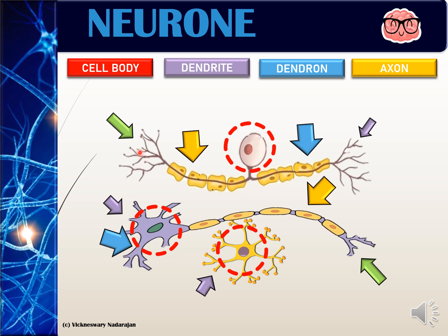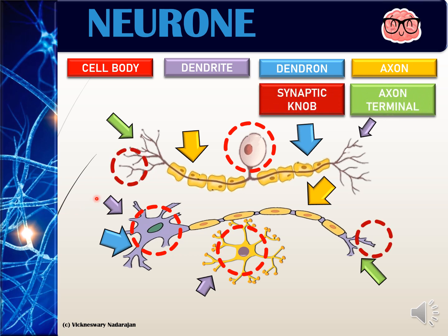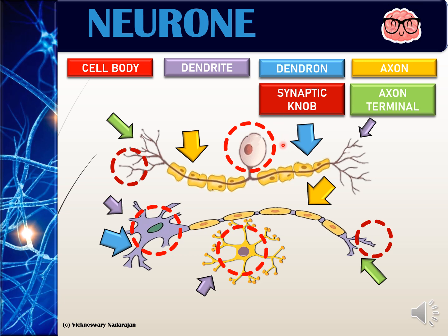At the ending of the axons we have what is known as the axon terminal. The axon terminal has circles at its tips known as the synaptic knob, which will be explained in detail when we study synapse.